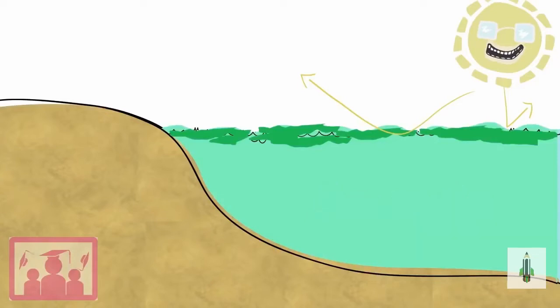Eutrophication is one reason why we need to be careful with fertilizers when we are growing crops.